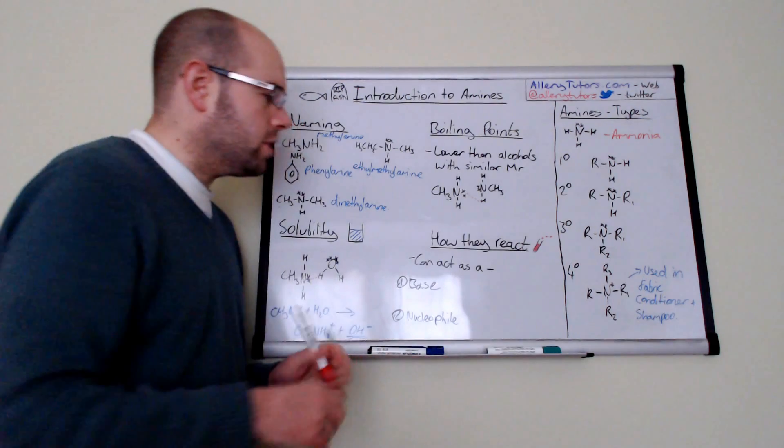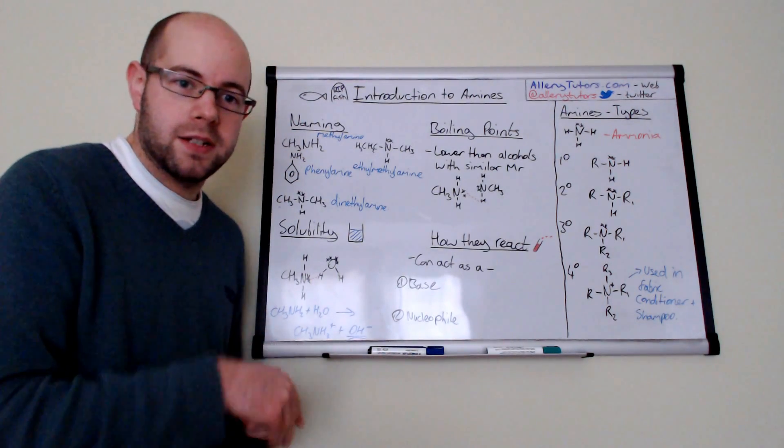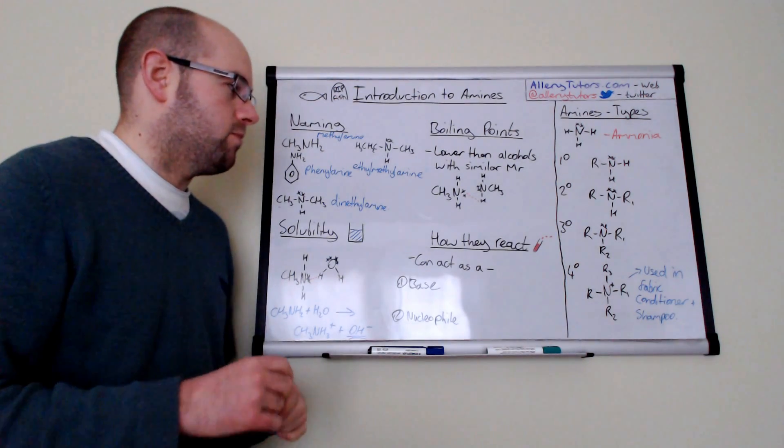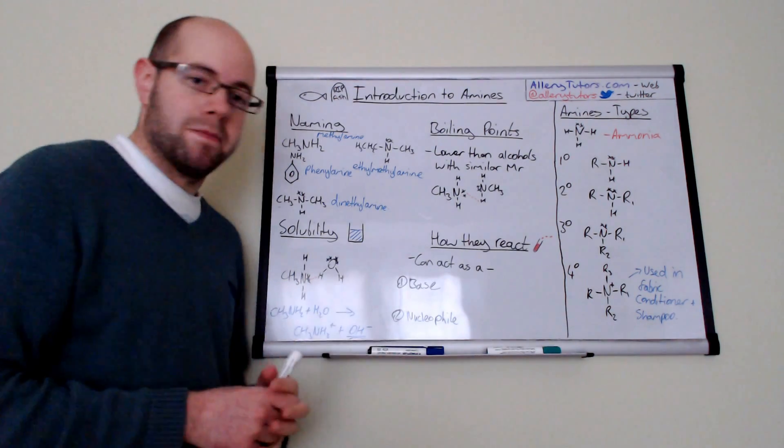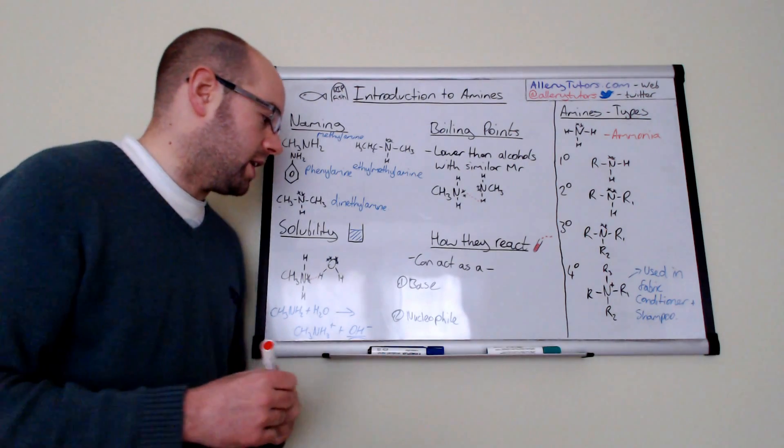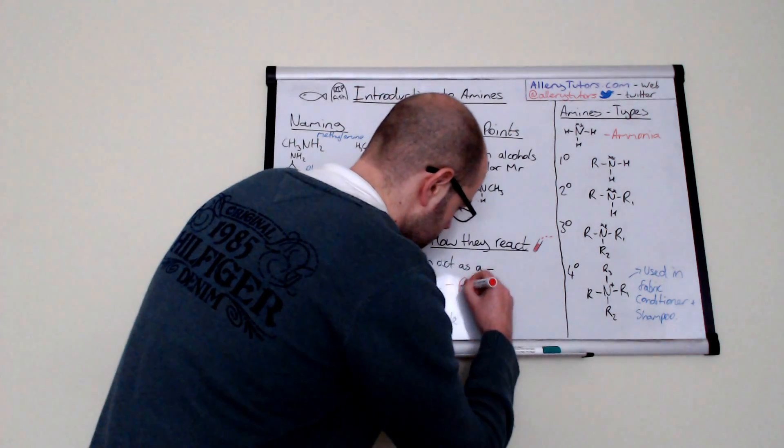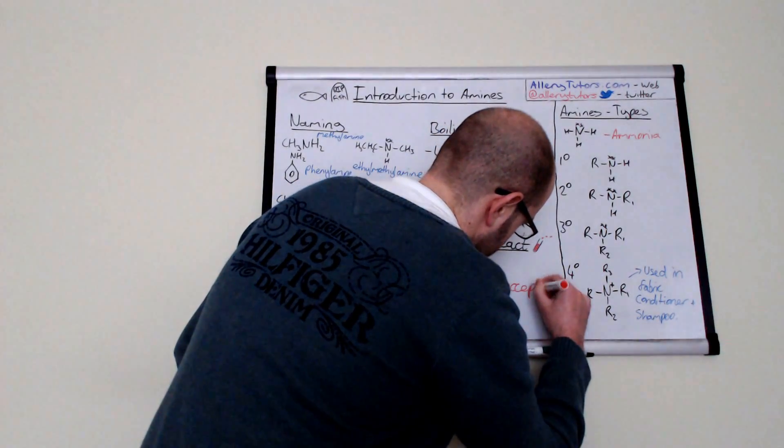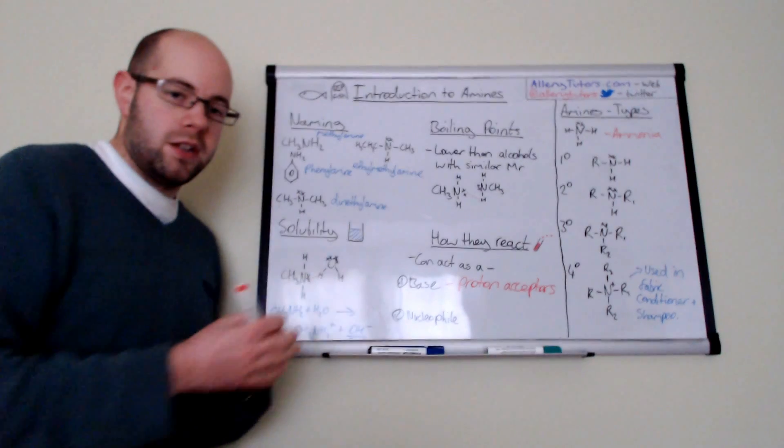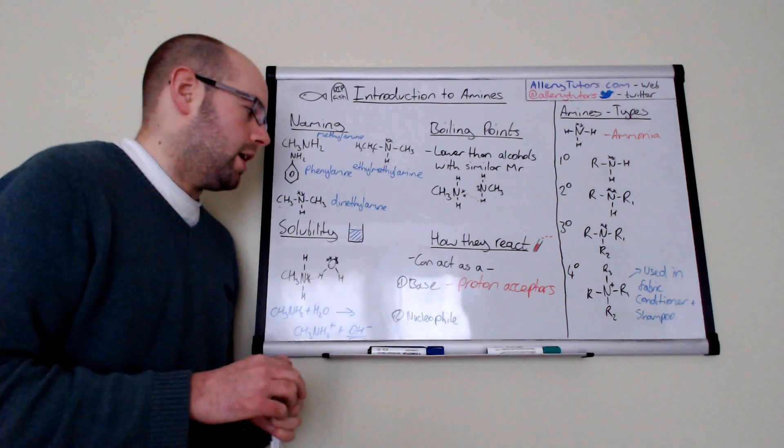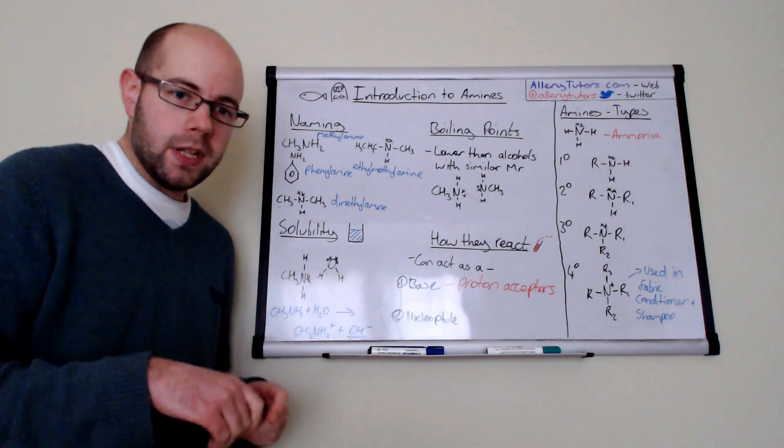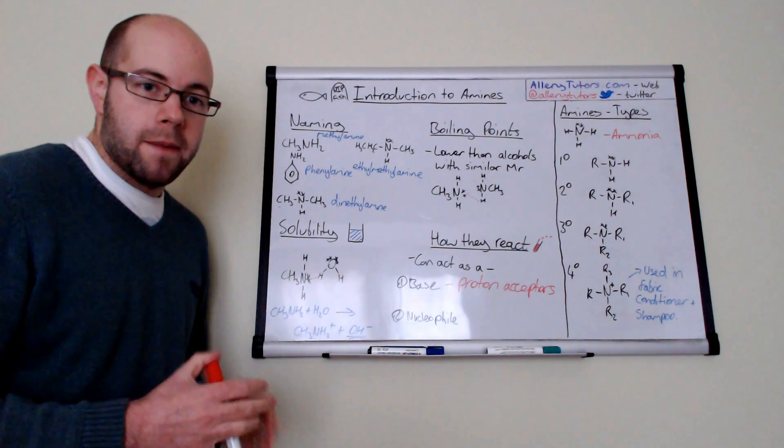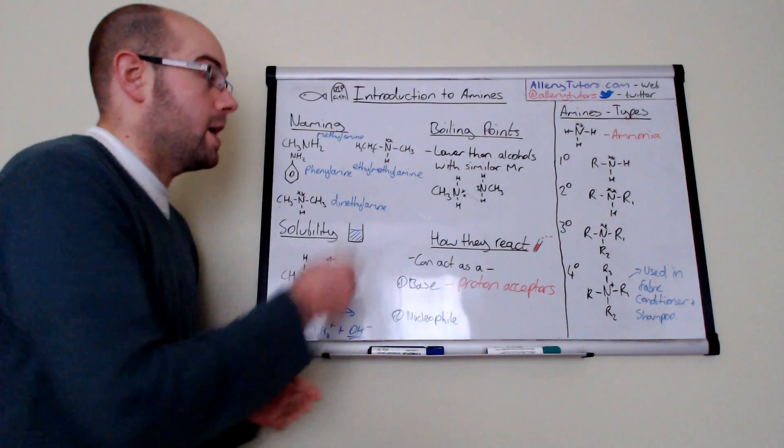So just look at the last one which is the way in which they can react. And amines are very versatile which makes them quite useful for reactions in chemistry. So they can actually act as a base. And the reason why they can act as a base is because they are proton acceptors. So they can accept a proton. So again, you'll see there'll be other videos on amines in the list of videos that I've got, the playlist. And you'll be able to see some reactions of how amines react as bases.